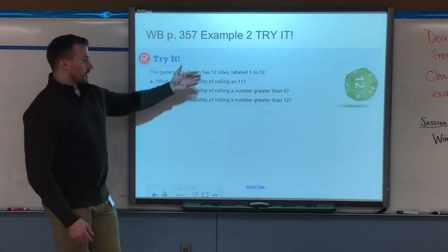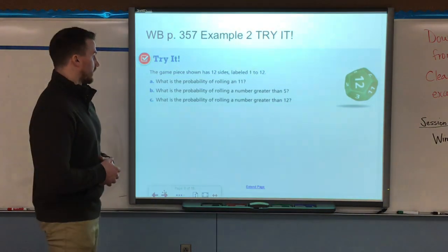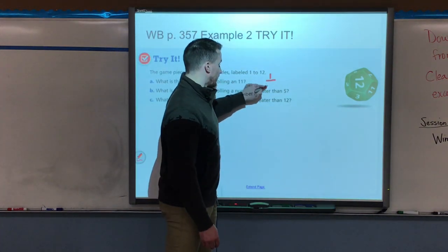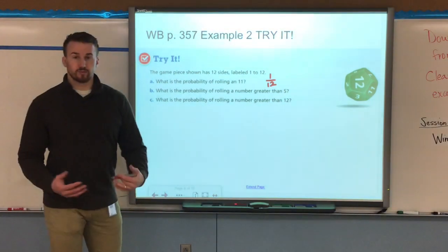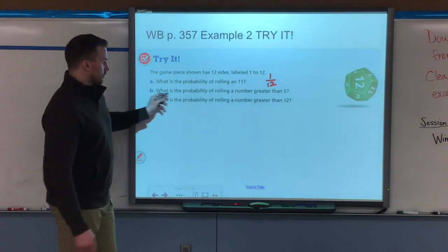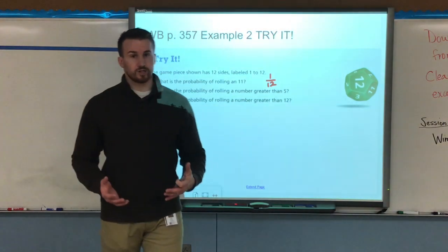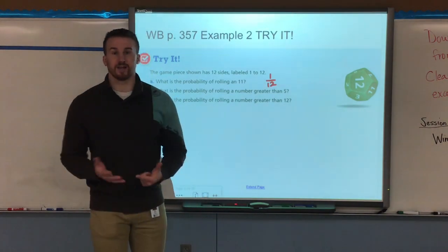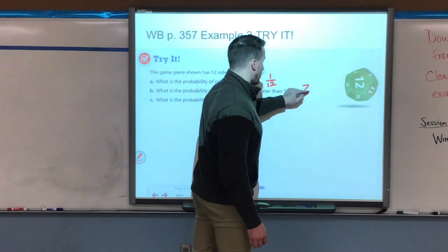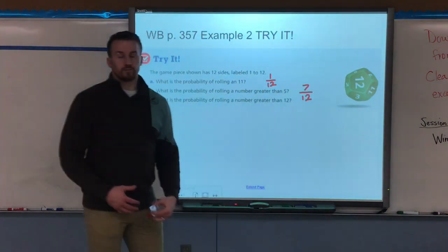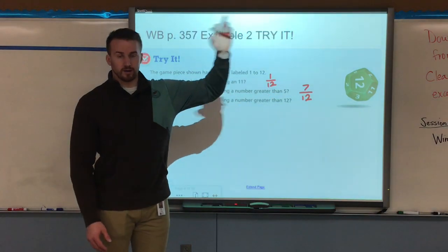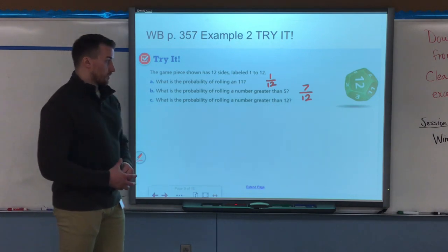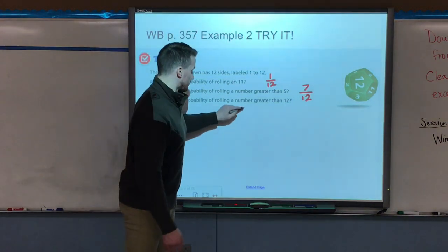For the try it example, now we have a number cube with 12 sides labeled one to 12. If I have 12 sides and I want the number 11, 11 is one side out of the 12, so that would be its probability as a fraction. What's the probability of rolling a number greater than five? Now here's where it changes because now I have several numbers greater than five: there's six, seven, eight, nine, ten, eleven, twelve. That's seven out of the 12 sides, so I put seven out of the 12. When you write probability as a fraction it's the number of desired over the total number of outcomes. Question C, what's the probability of rolling a number greater than 12? Well are there any numbers greater than 12? No, 12 is the greatest, so we would say zero percent chance of it happening, it's impossible.